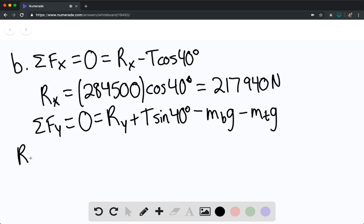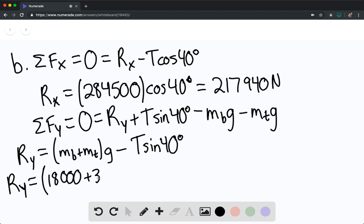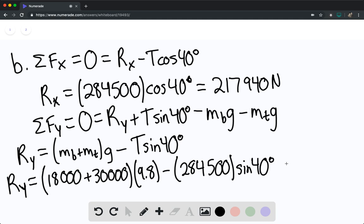So R sub y is going to be equal to the sum of the masses times g minus the tension force sine of 40 degrees. R sub y equals 18,000 plus 30,000 times 9.8 minus 284,500 newtons times sine of 40 degrees, equaling 287,521 newtons.